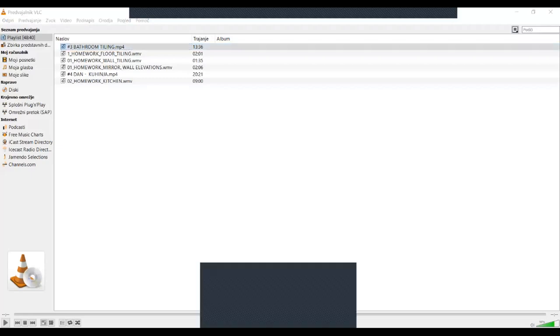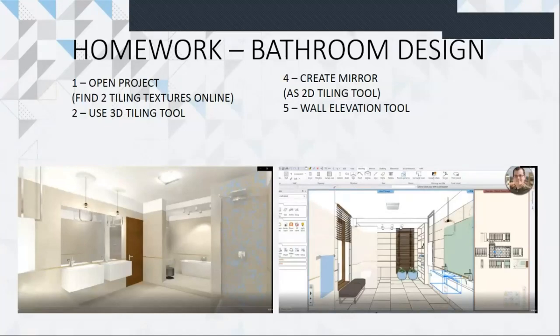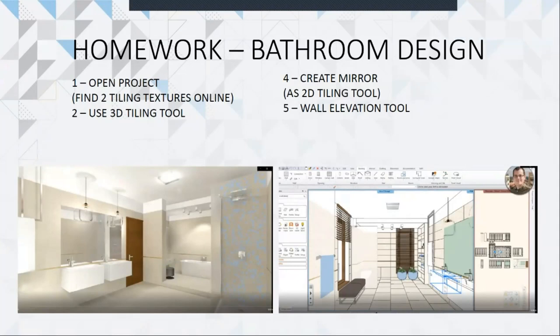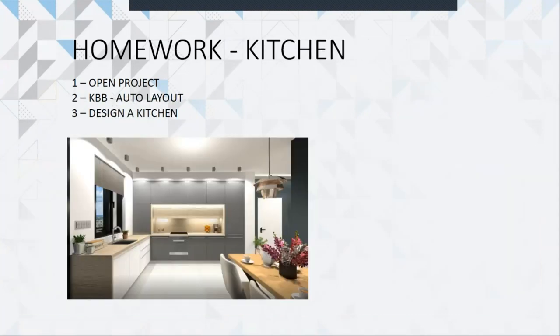That was the videos I wanted to show you. For homework: you will open the project I send you and use the 3D tiling tool by finding your own tile from the internet. Create a mirror by drag and drop from the library, and create wall elevations. For kitchen, open the project and create an auto layout kitchen easily, or you can follow along with the step-by-step tutorial we saw together. Using the auto layout is much quicker.